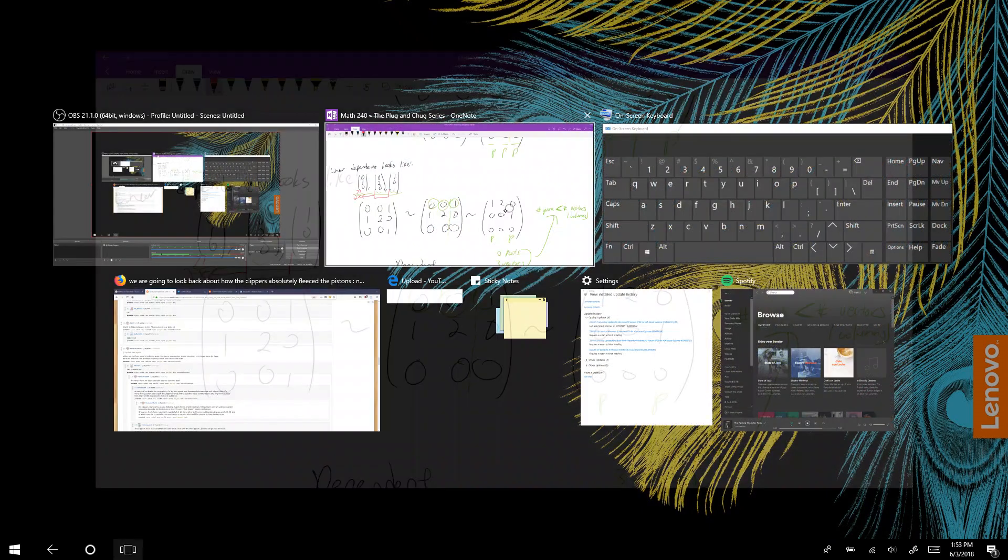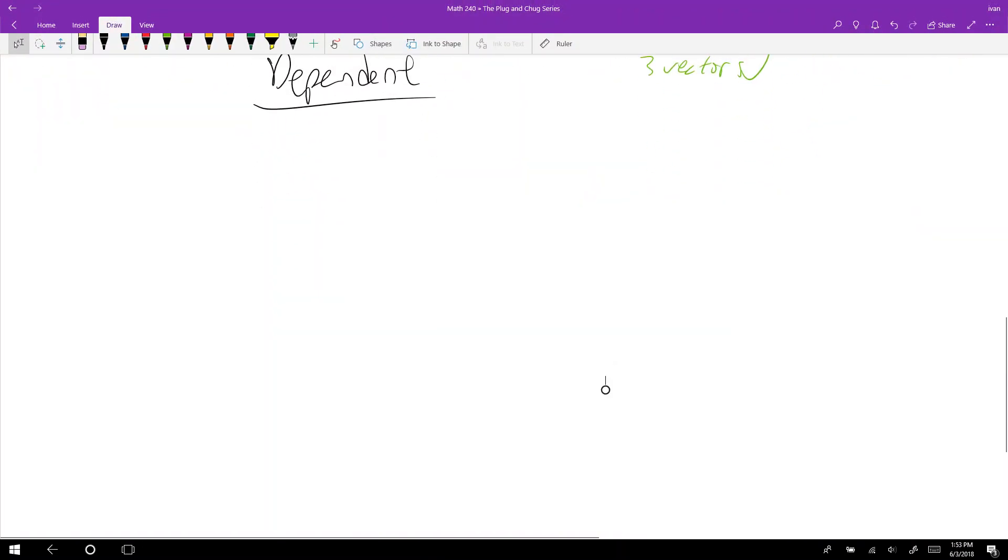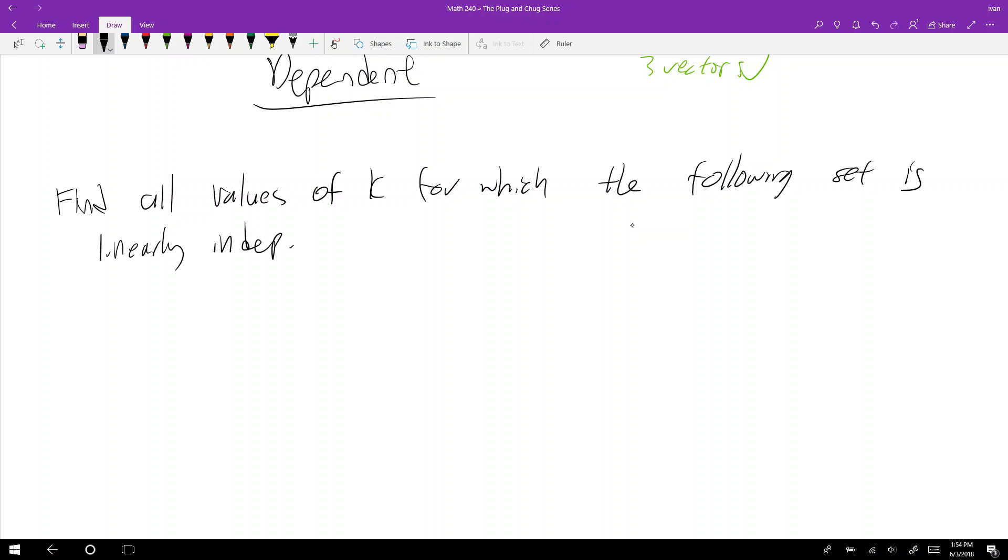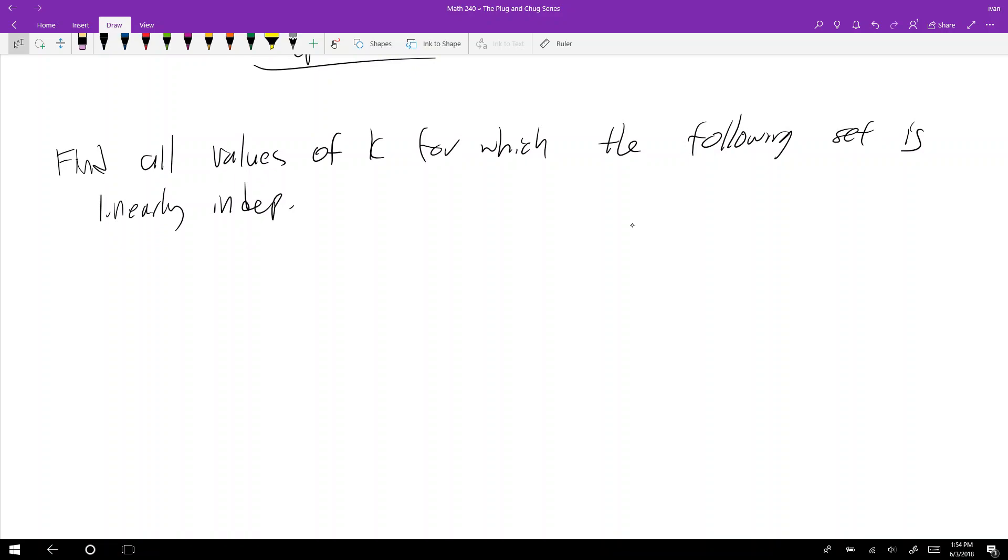All right, this next question on linear dependence throws an unknown in. The question asks: find all values of K for which the following set is linearly independent. All right, and your set of vectors is...